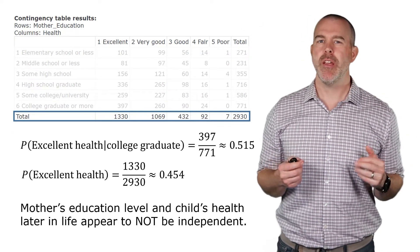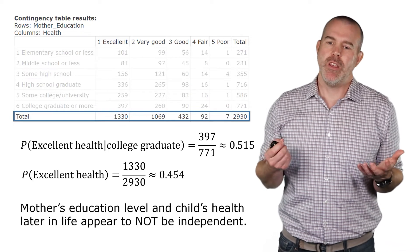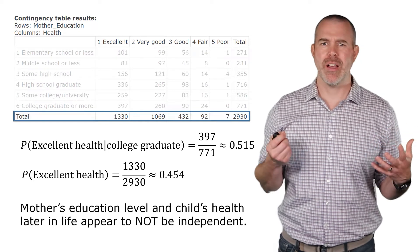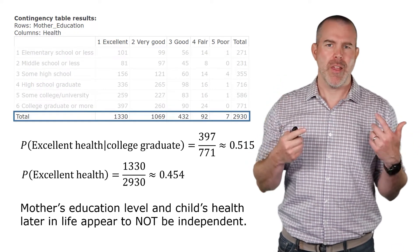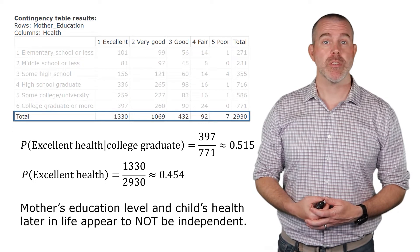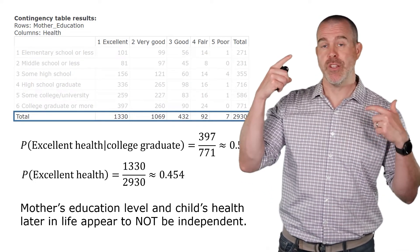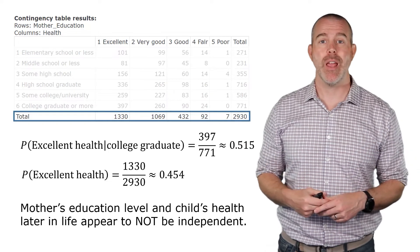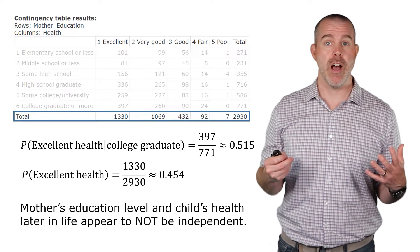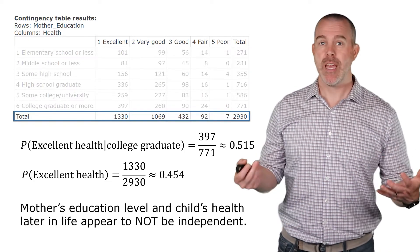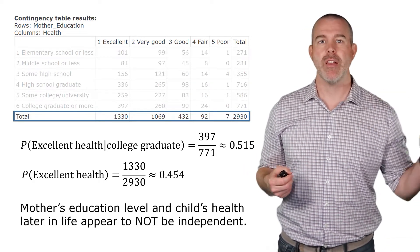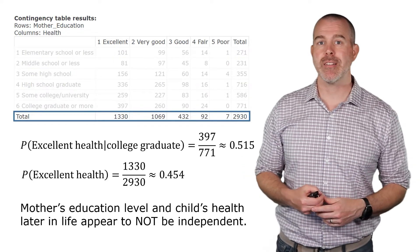It looks like they may not be independent. When you have data, probabilities are never going to be identical just because of rounding and sample size issues, but these look pretty different — about six percentage points. We'll actually learn toward the end of the semester what's a threshold for how different is 'different enough' — that's called a chi-squared test for independence. But following the definition of independence given our data, they do not appear to be independent.